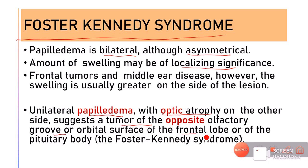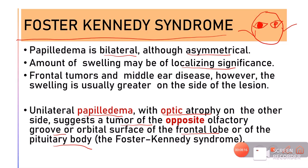The tumor in Foster Kennedy syndrome is present on the side of the eye showing optic atrophy. For example, if a patient has chronic secondary optic atrophy in one eye and papilledema in the other, that is Foster Kennedy syndrome. It indicates a tumor in the orbital surface of the frontal lobe or olfactory groove, on the same side as the optic atrophy.